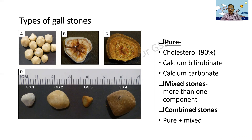What should we write in the exam? The gallstones can be divided into pure stones, mixed stones, and combined stones. Pure stones are mostly cholesterol, 90%. The others are calcium bilirubinate and calcium carbonate — these are all the pure stones. Mixed stones mean when there is more than one of these components — at least two or even three are present — it is called a mixed stone.